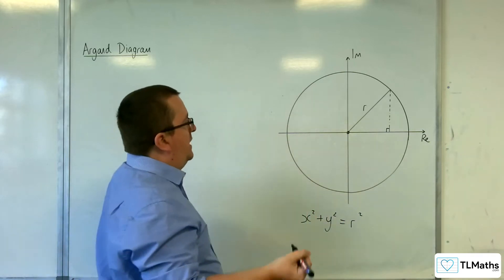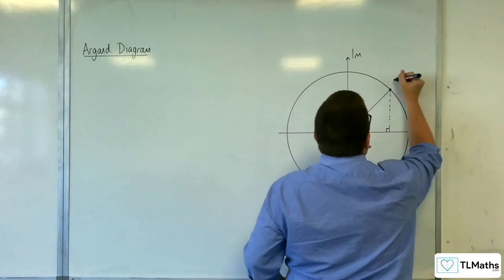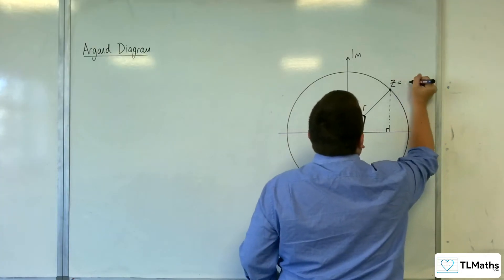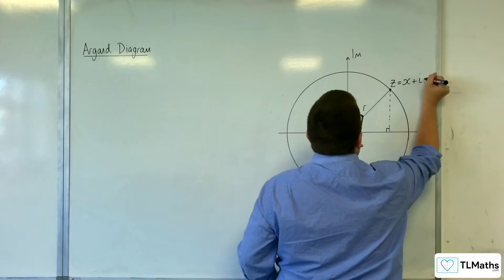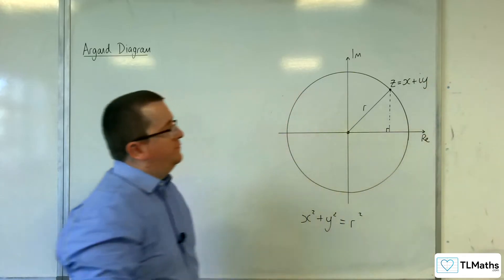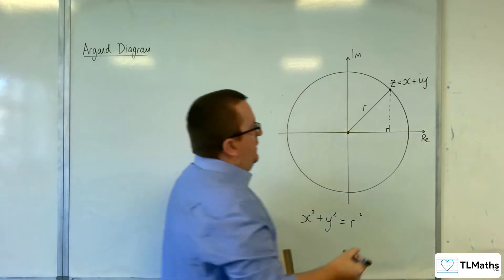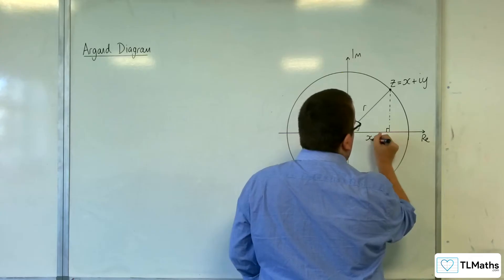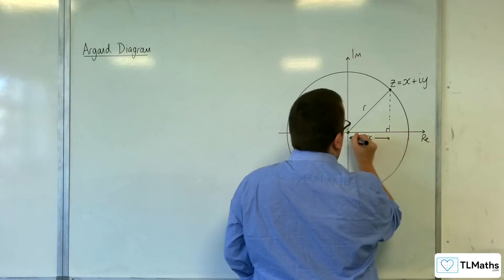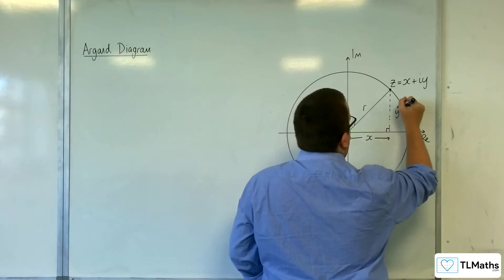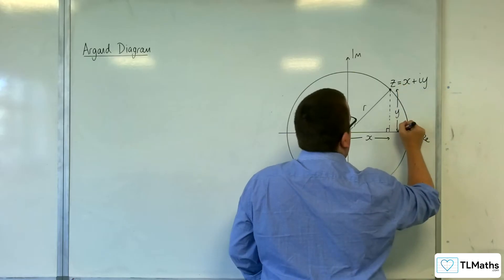So, if we think about this as each point on this circle will have a coordinate of z equals x plus iy, then it is x along on the real axis, and y along on the imaginary axis.